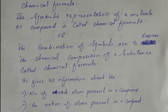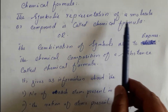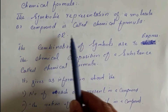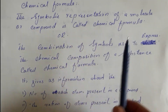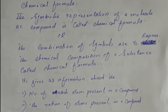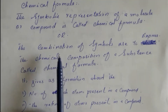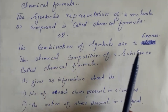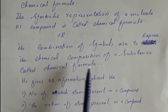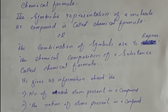Today's topic is about chemical formula. What is a chemical formula? The symbolic representation of a molecule or compound is called a chemical formula. It is the combination of symbols used to express the chemical composition of a substance.